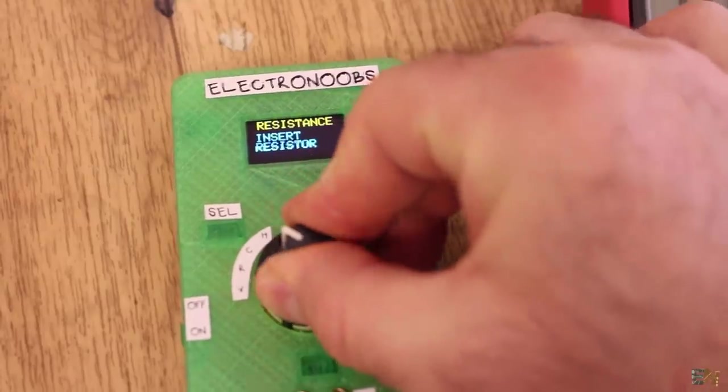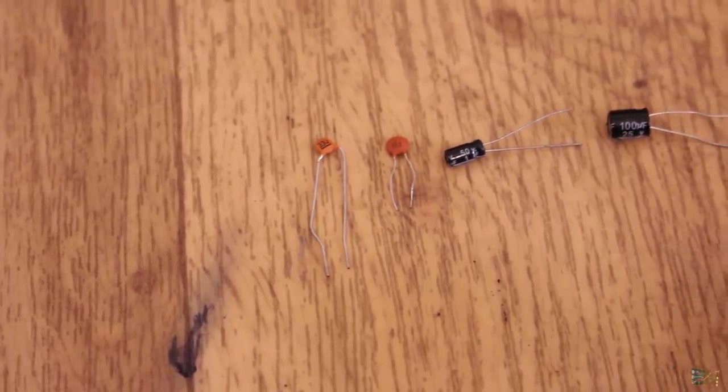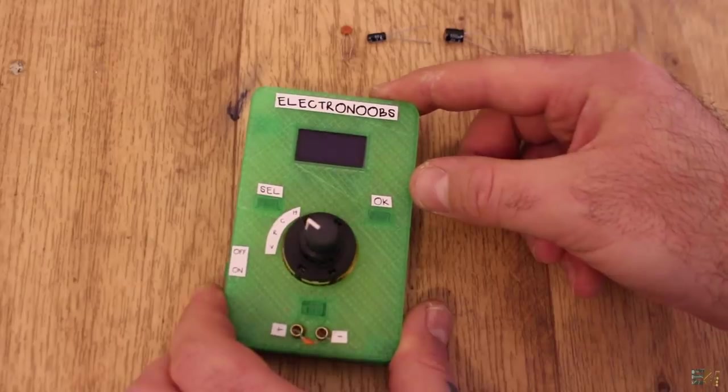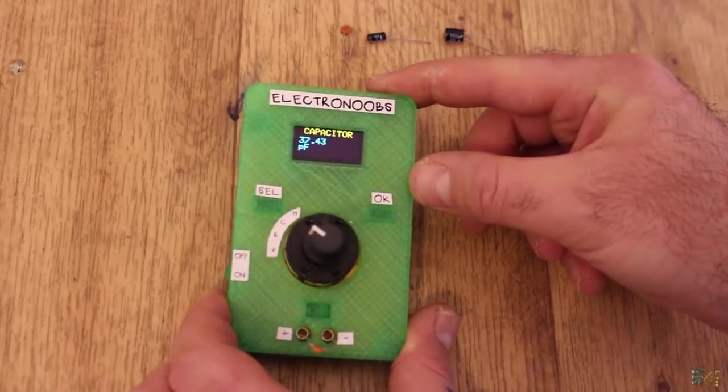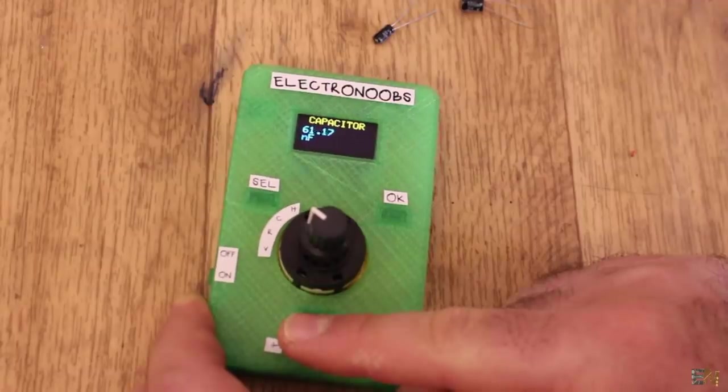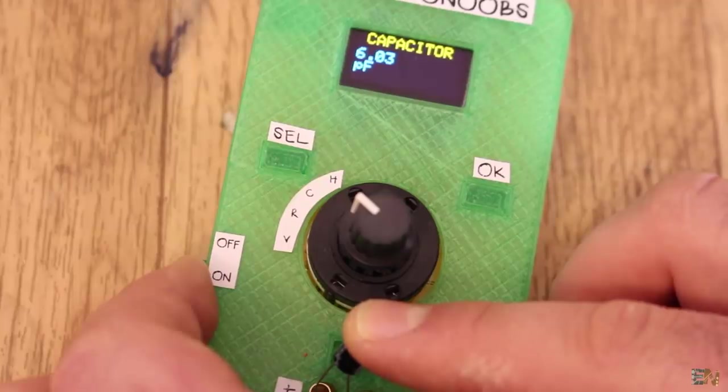Now let's see capacitance. I will measure 33pF capacitor, a 100nF capacitor, a 1uF capacitor and a 100uF capacitor. I measure them with the homemade multimeter and I get pretty close values to the real ones. 37pF, 64nF, 1uF and 100uF, so these are good results.